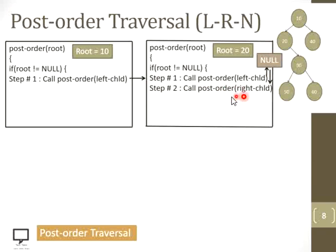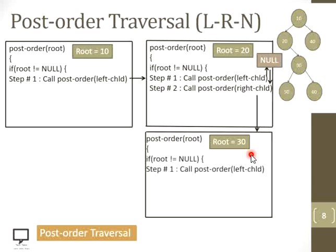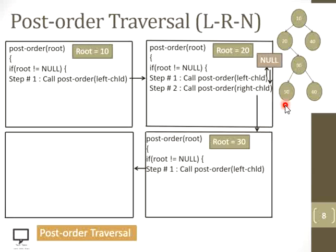Step 2 is to call post-order recursively passing the right child, as we have done with the left and now it's time to process the right subtree. We call the function passing the right child of 20, which is 30. Now in a new window, root becomes node 30. We check root is not null — condition is true. Now we call post-order recursively passing the left child of root node 30, which is 50. A separate window is created for post-order where root node is 50.